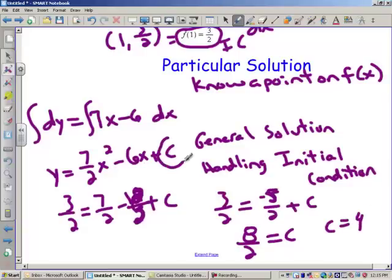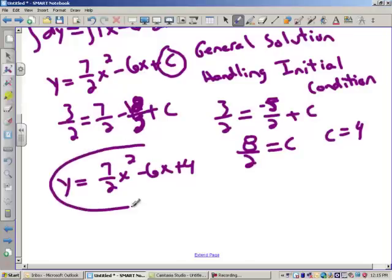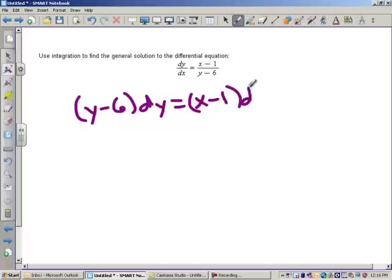So my particular solution is y equals 7 halves x squared minus 6x plus 4. This is not general. It's particular because I know the exact specific explicit equation for y equals this right here. So this is called a particular solution. That's where we do one step further and we handle the c. All right, let's take a look at another example where I've got y's and x's. So I want you to see separation of variables.